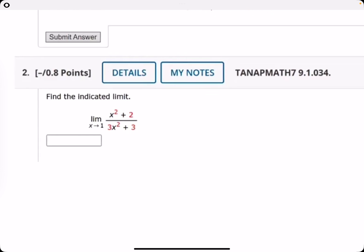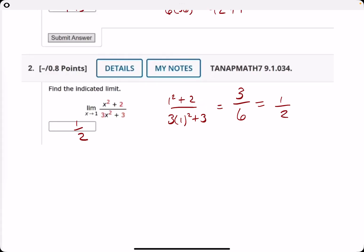Let's keep it going. Number 2, find the indicated limit. Once again, always start with direct substitution. We get 1 squared which is 1, plus 2, which is 3, over 3 times 1 which is 3, plus 3, which is 6. One half is our final answer.